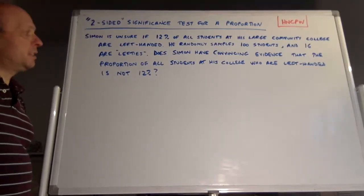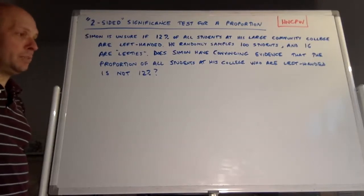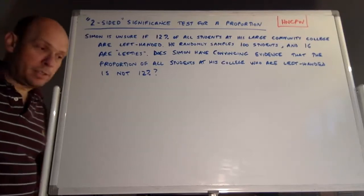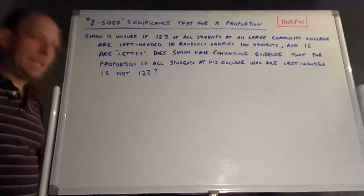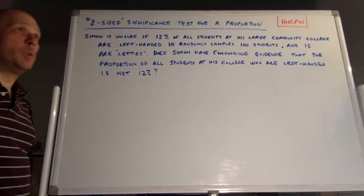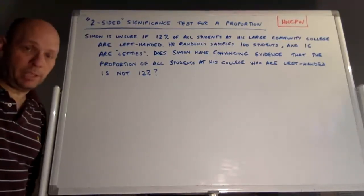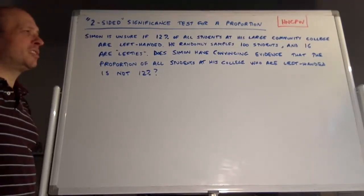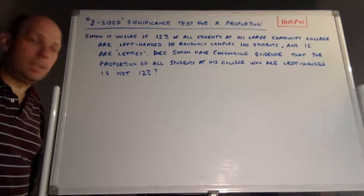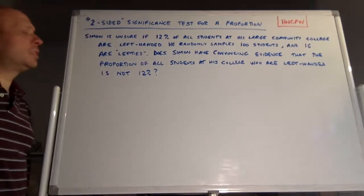The question is: does Simon have convincing evidence that the proportion of all students at his college who are left-handed is not 12%? It's a two-sided test because he doesn't have any inkling one way or the other. It's not like he thinks the school has more or less than 12% left-handers. He just is unsure whether it is 12%, so he wants to run this statistical test.